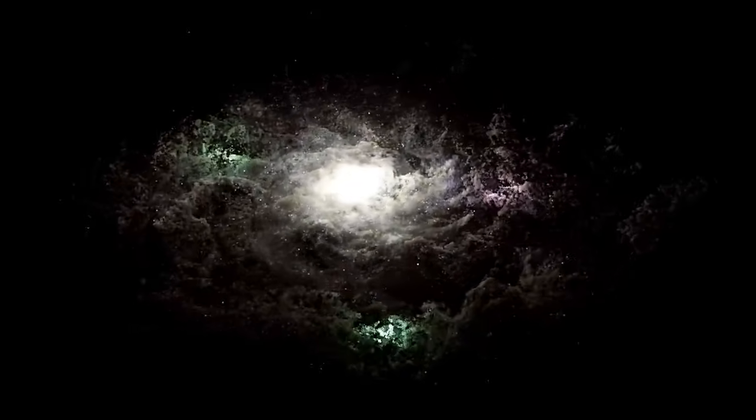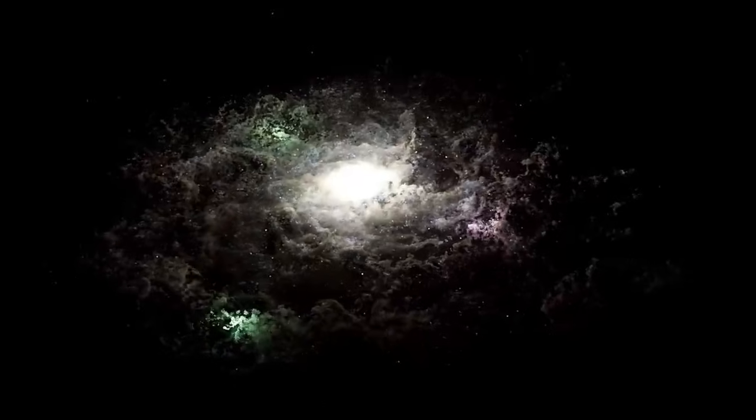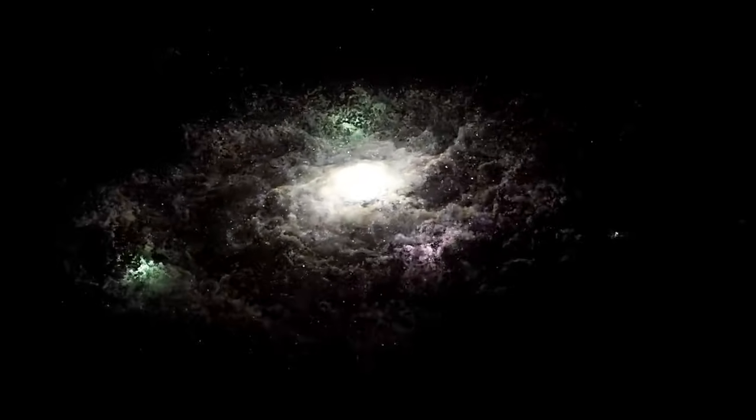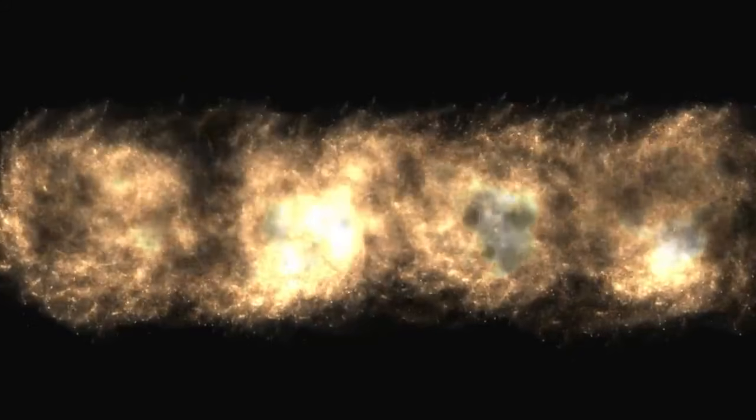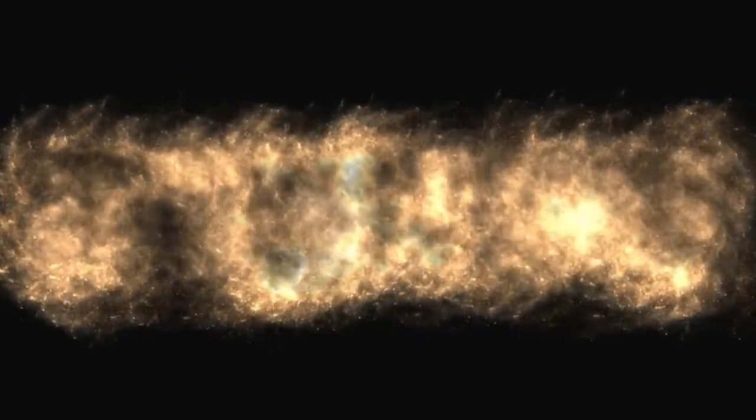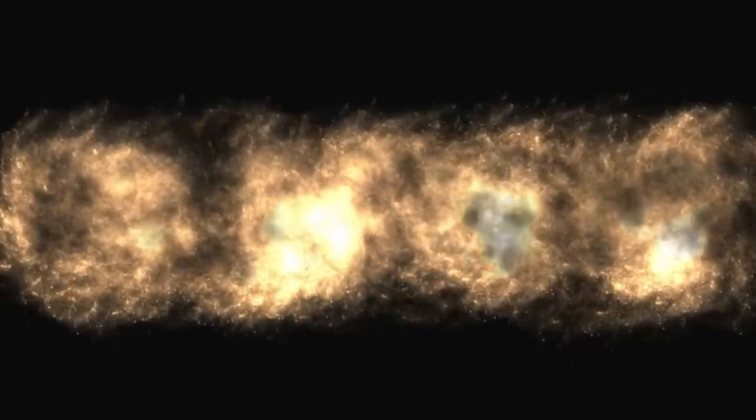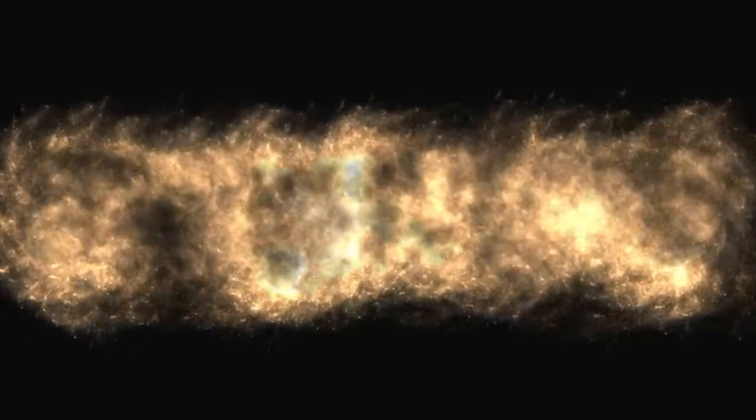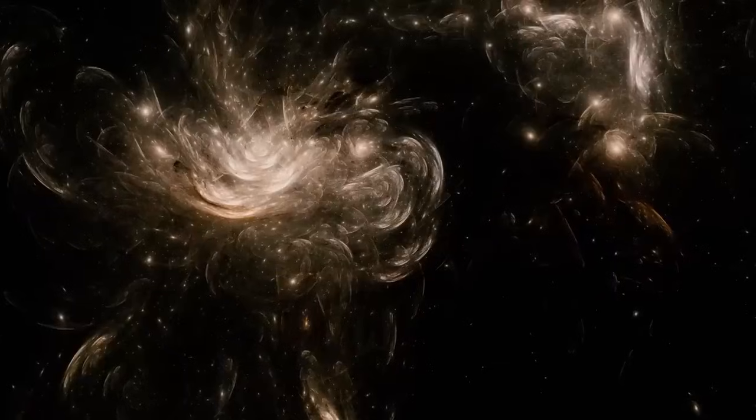Utilizing Einstein's theory of general relativity, Webb produced a sweeping panoramic image of ABEL 2744, displaying approximately 50,000 infrared light sources, including galaxies previously concealed from our view.